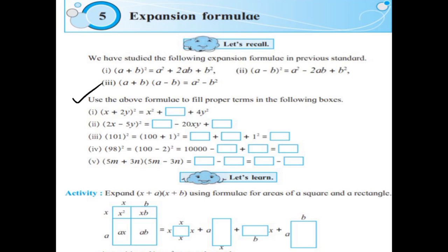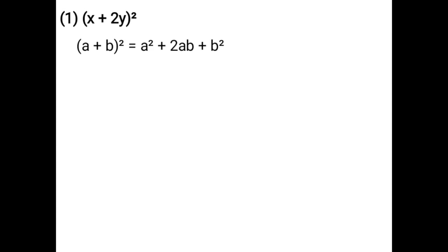Use the above formula to fill proper terms in the following boxes. First: (x + 2y) whole square. You have to use the formula of (a + b) whole square. The formula of (a + b) whole square is a² + 2ab + b². Here a is x and b is 2y. You have to write the expression form of a² + 2ab + b².